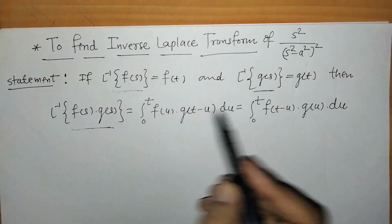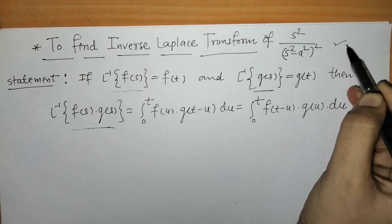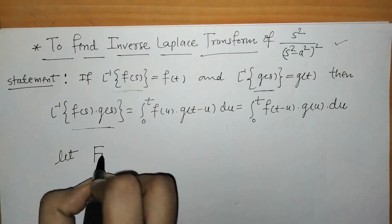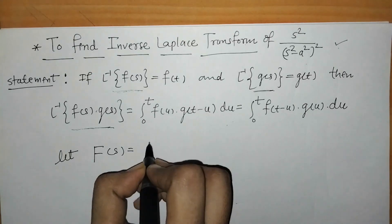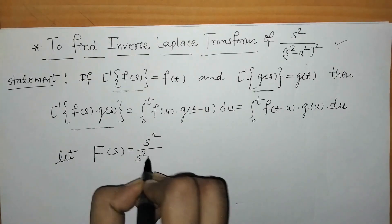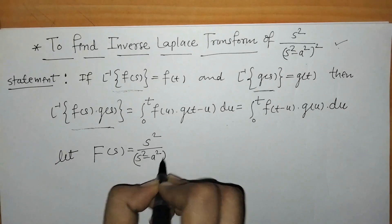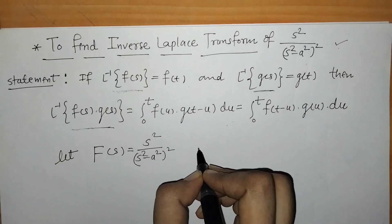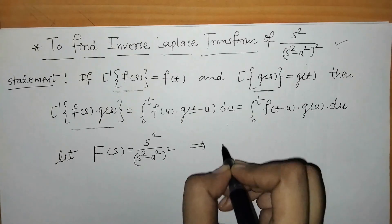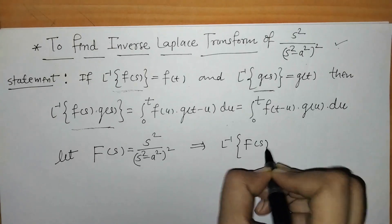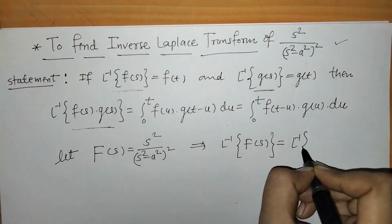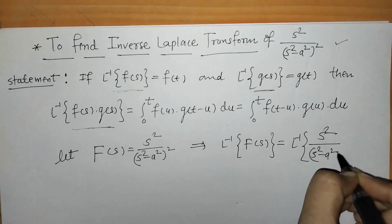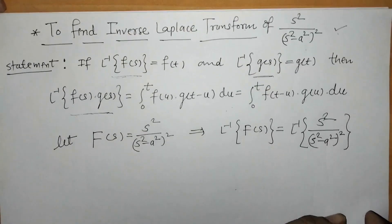We have to apply the convolution theorem for finding the inverse Laplace transform of this given function. Here we have to write down this given function as F(S). This is S² upon (S² − A²)², right? And we have to find L⁻¹ of this given function F(S), that means L⁻¹ of S² upon (S² − A²)².